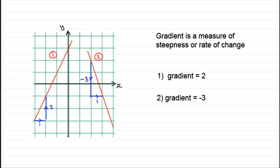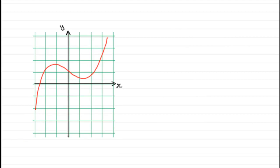And what happens if we have a horizontal line? This line here, number three, what's the rate of change of y with respect to x in this one? Well, every time we move across one unit in that direction, y neither goes up nor down. So what we've got here is a gradient of zero. There's no rate of change.